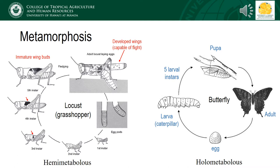Each of these stages are referred to as an instar, and depending on the insect, there may be different numbers of instars. In this example on the left, the locust has five instars before undergoing a final molt to become an adult. In mayflies, there can be upwards of 20 molts before they become adults. These immature stages can be told apart from the adults because their wings are not yet fully developed. Only adults are capable of flying.